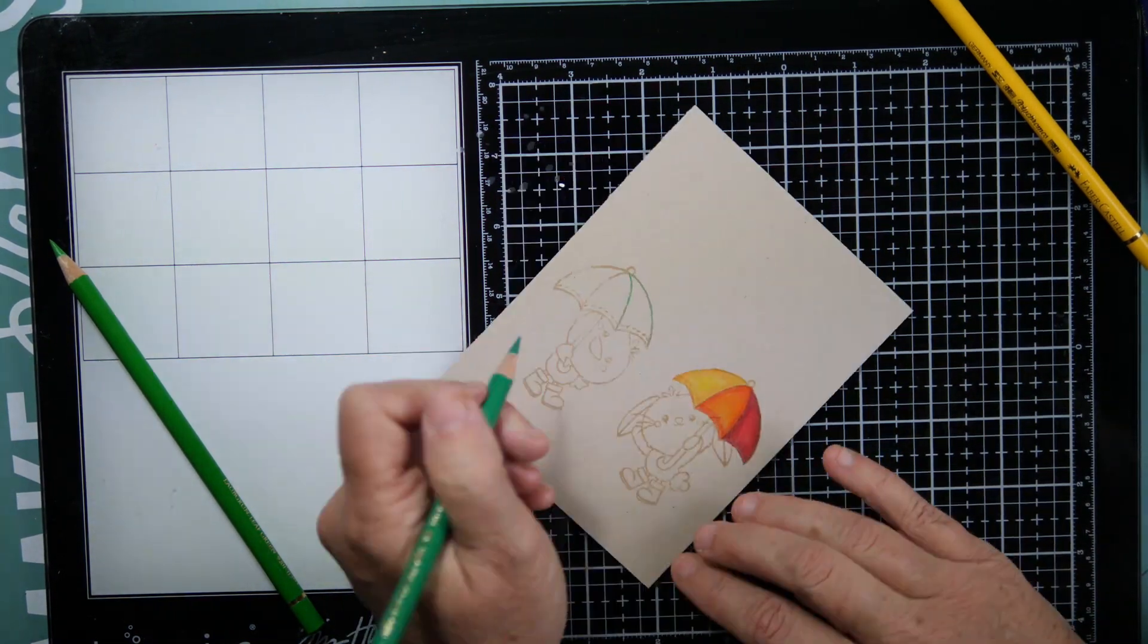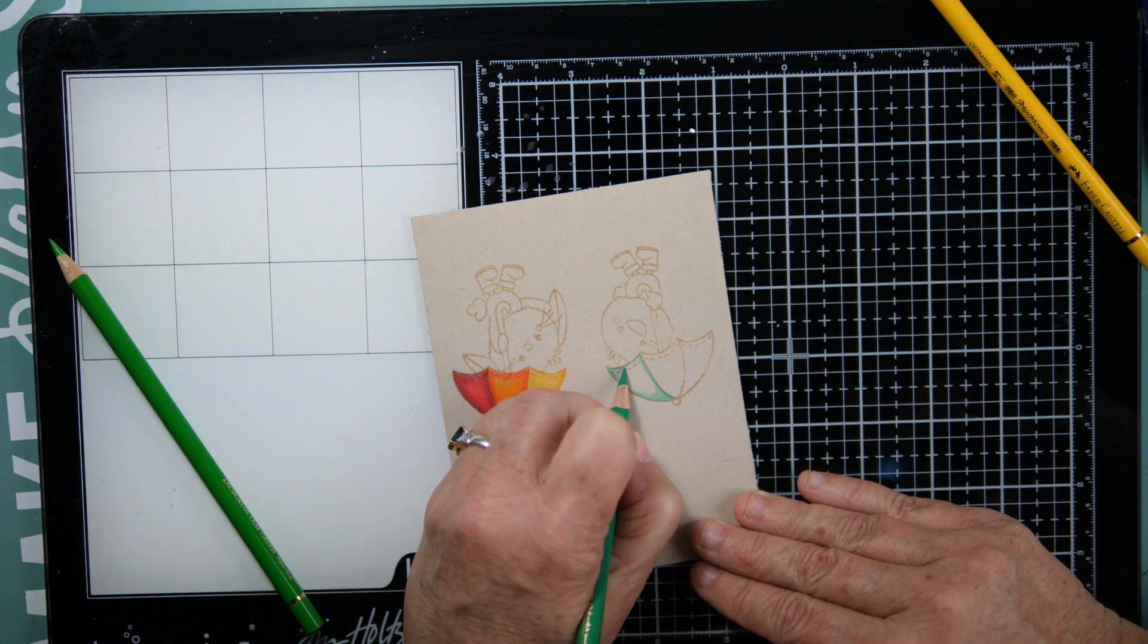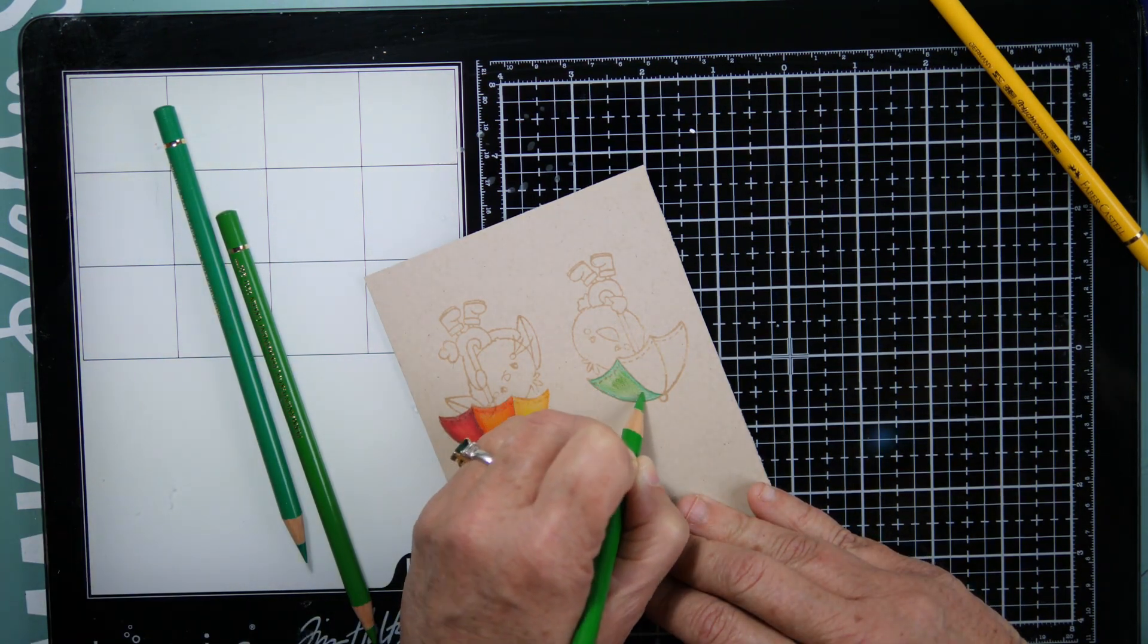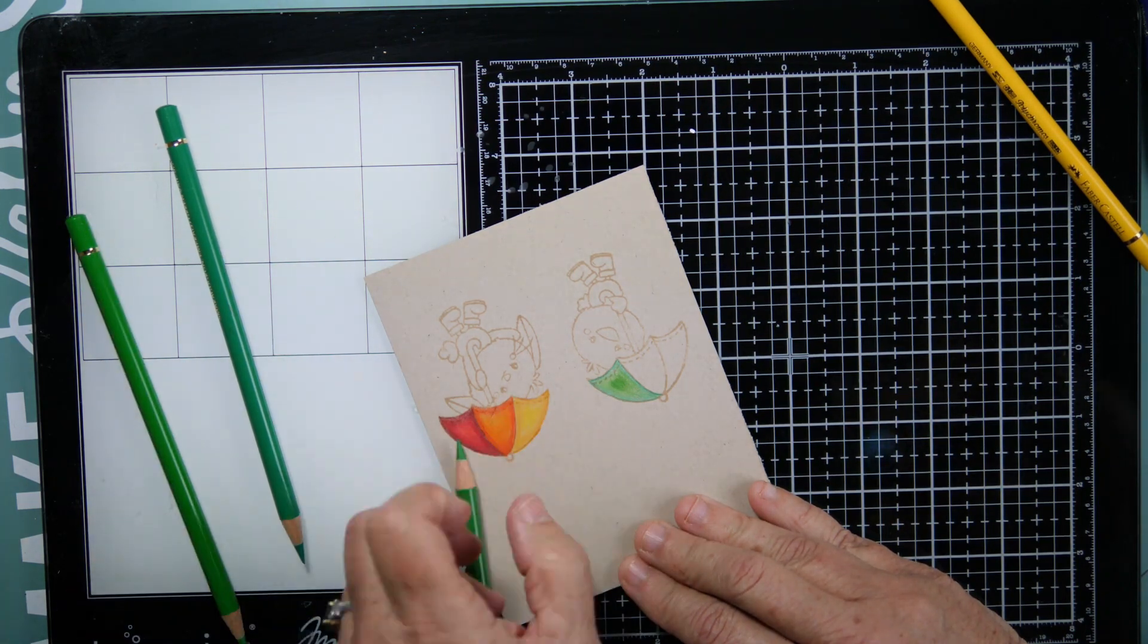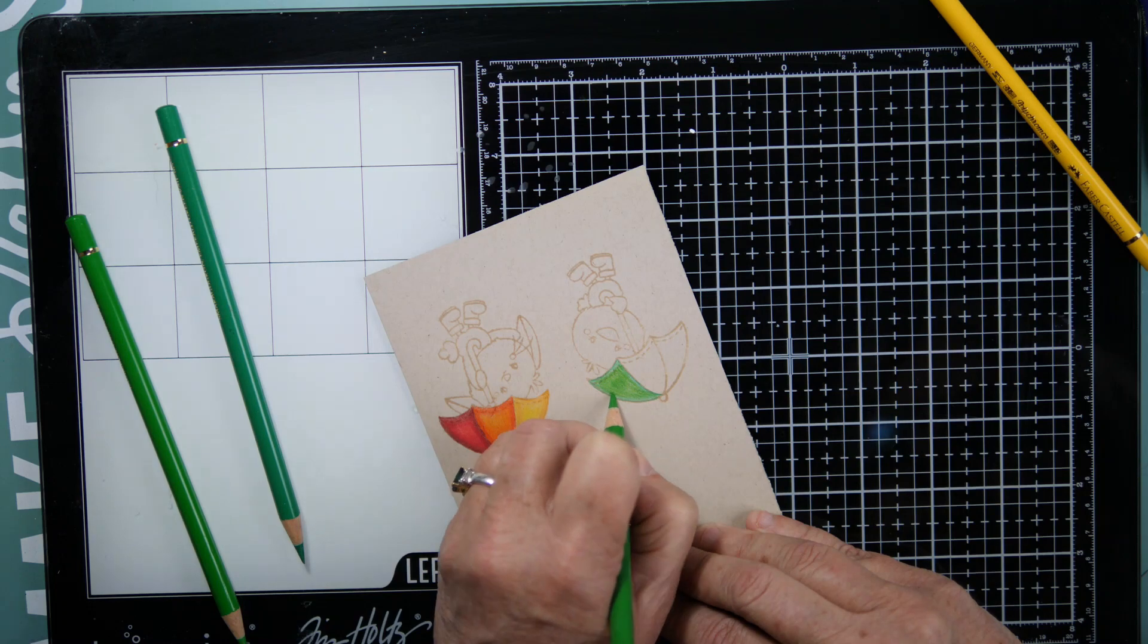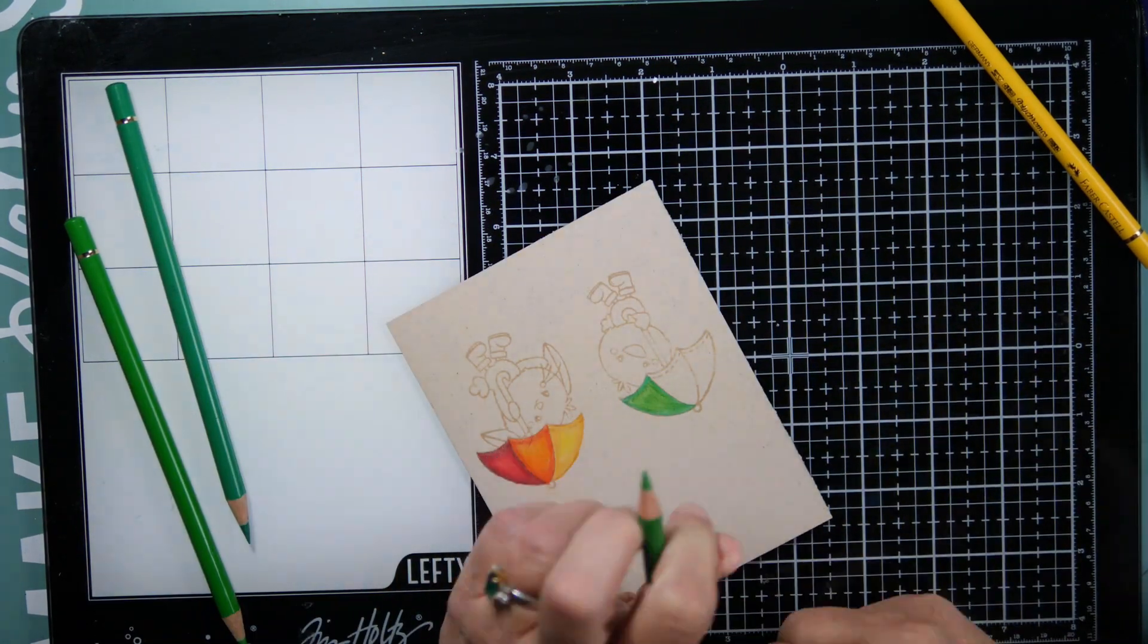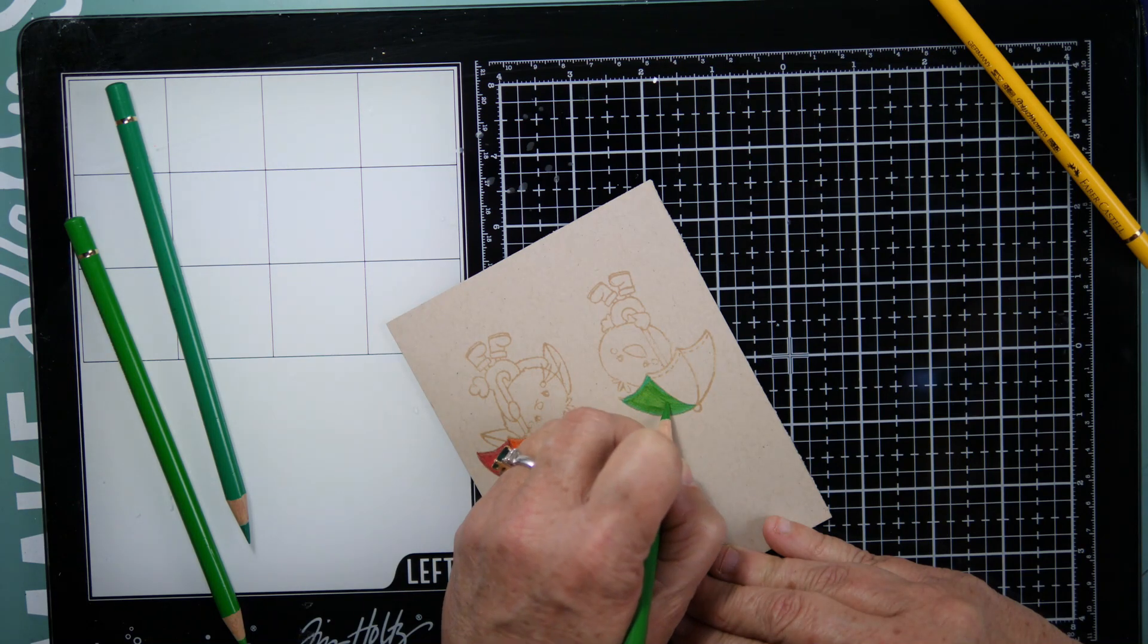So while the placement of these little critters is pretty similar, I did change up the card. This is again the Spring is in the Air stamp set. Jamie's shop will be listed in the description box below.